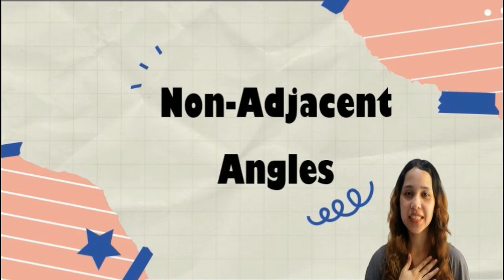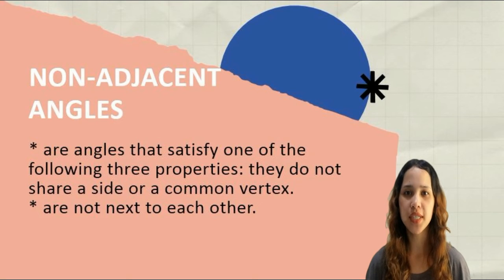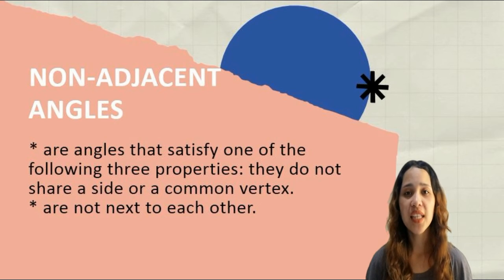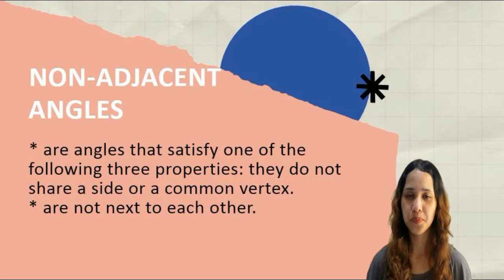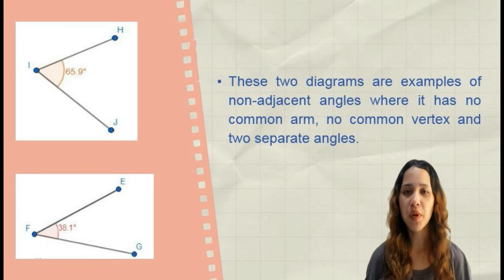Now let's proceed to non-adjacent angles. Non-adjacent angles are angles that satisfy only one of the properties — they do not share a side or a common vertex. Non-adjacent angles are also not next to each other. These two diagrams are examples of non-adjacent angles, where there is no common arm, no common vertex, and the two angles are completely separate.